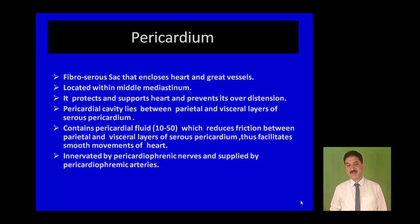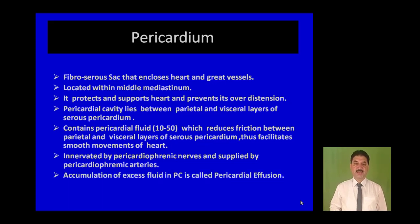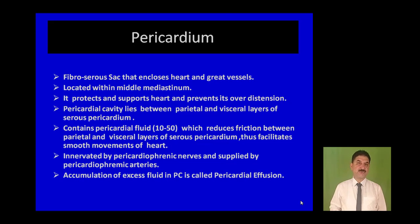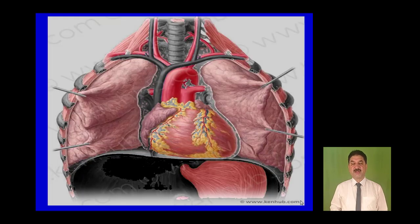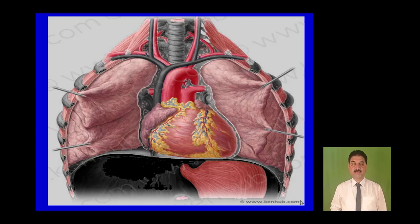The pericardium is innervated by pericardiophrenic nerves and supplied by pericardiophrenic arteries. Accumulation of excess fluid in the pericardial cavity is called pericardial effusion. It may lead to cardiac tamponade, thus reducing cardiac output.